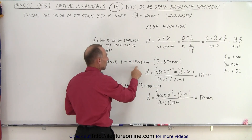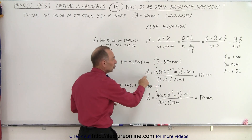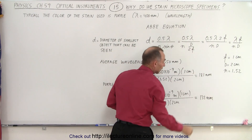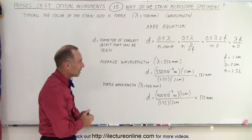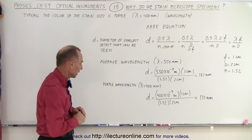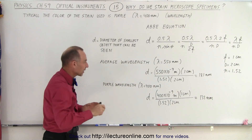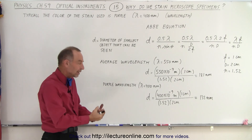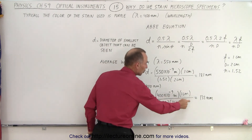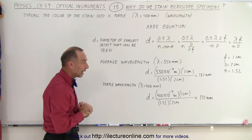Notice that if we use the average wavelength of light, that's 550 nanometers, and we plug that into the Abbe equation, we get a diameter of the smallest object we can resolve of 181 nanometers — using the following information: the focal length of the lens is one centimeter, the diameter is two centimeters, and the index of refraction of the immersion oil is 1.52. Then if we replace the wavelength from 550 to 400 nanometers by staining the specimen, so that now we get purple light being reflected off our specimen with a wavelength of 400 nanometers, when we plug that into our equation, we can now resolve objects that are even smaller, all the way down to 132 nanometers instead of 181 nanometers.